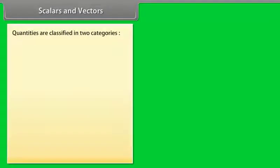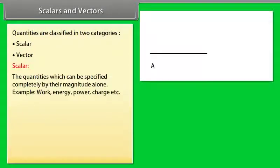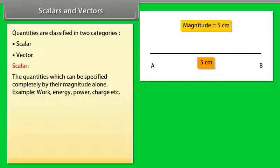Scalars and vectors. In physics, quantities are classified in two categories: A. Scalar and B. Vector. Scalar: The quantities which can be specified completely by their magnitude alone. For example, work, energy, power, charge, etc.